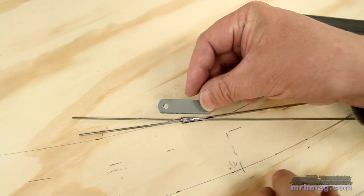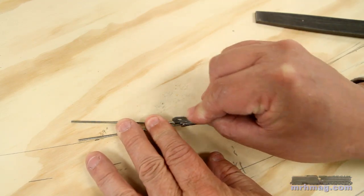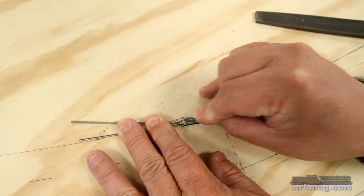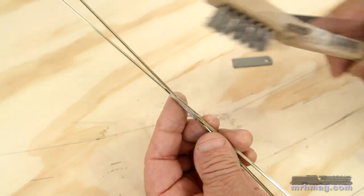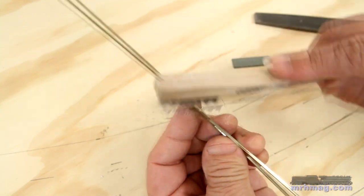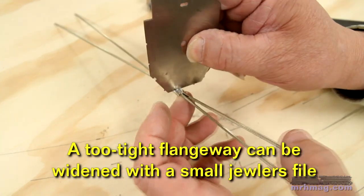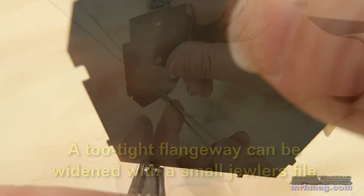A few passes with a file flattens the bottom of the frog so it will sit flat on the ties. I use a two inch long piece of a hacksaw blade to mill the solder out of the frog's flangeways. Then I wire brush the frog to clean it up. I use the flangeway end of the NMRA gauge to check the width of the frog's flangeways. The flangeway nub should fit precisely.